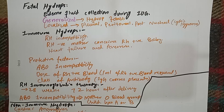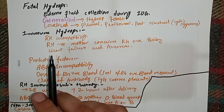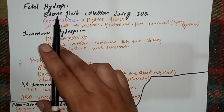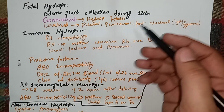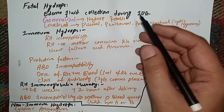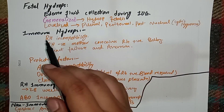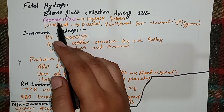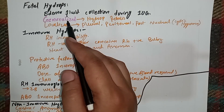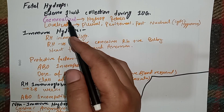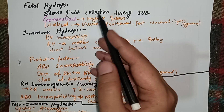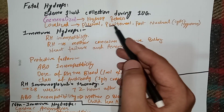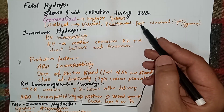In this video we will be discussing fetal hydrops. Fetal hydrops is basically the collection of edema fluid within the fetus during intrauterine growth. This fetal edema can be generalized or localized. In generalized edema there is fluid collection in the whole body, while in localized edema fluid is collected into the pleural cavity, peritoneal cavity, or the post-nuchal region, which is termed cystic hygroma.